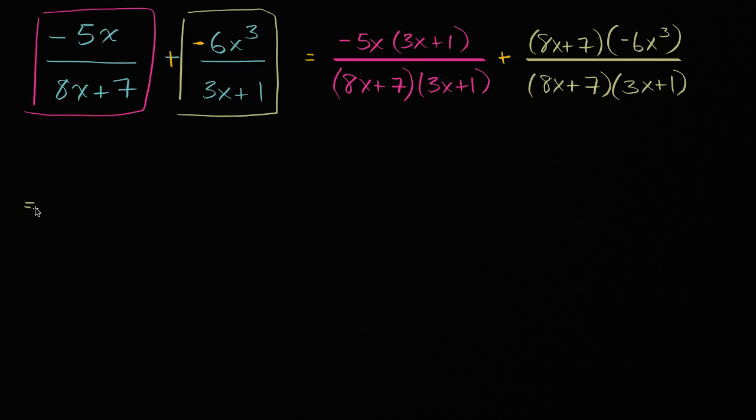And now we're ready to add. This is all going to be equal to, I'll write the denominator in white. So we have our common denominator, 8x plus 7 times 3x plus 1.